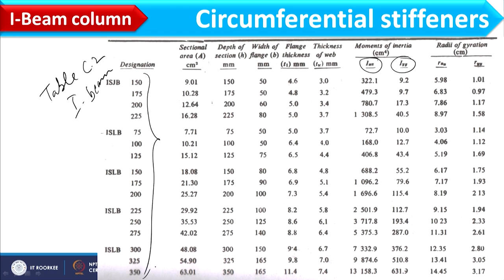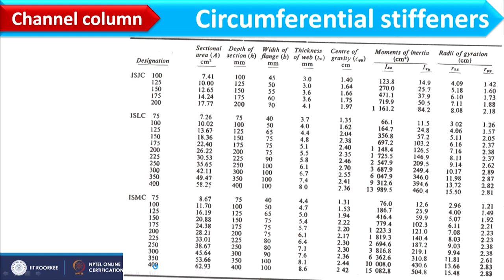The selection process will be clearer when solving a problem. Data for channel stiffeners is given in Table C3. In this way we design the vessel under external pressure and choose the correct stiffener for the vessel. That is all for this lecture. Thank you.